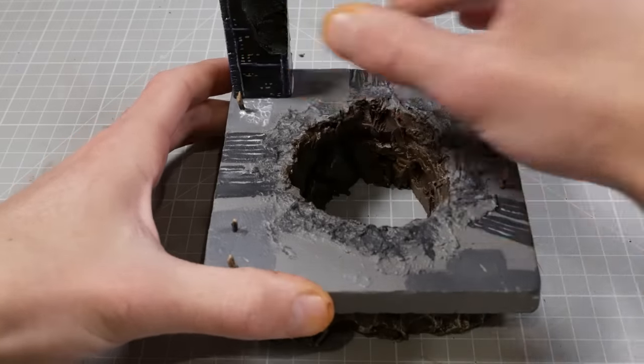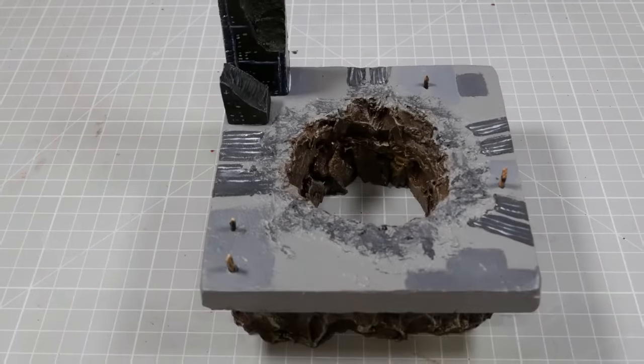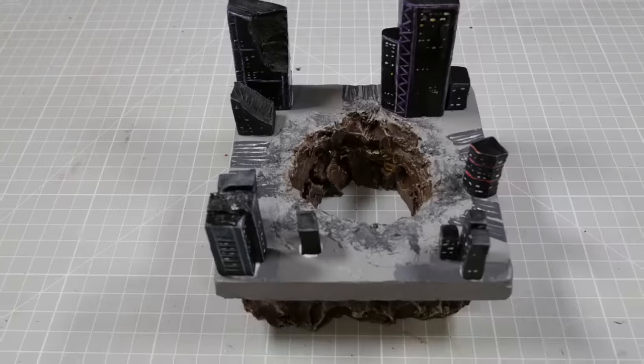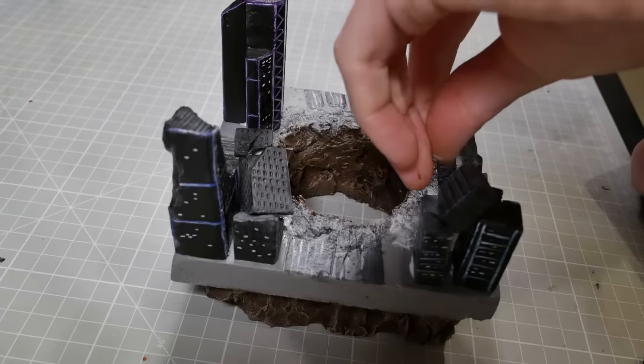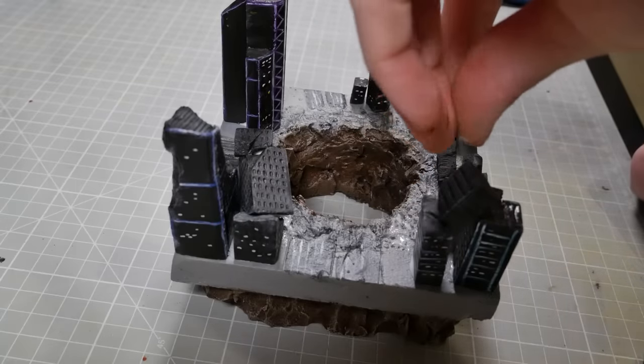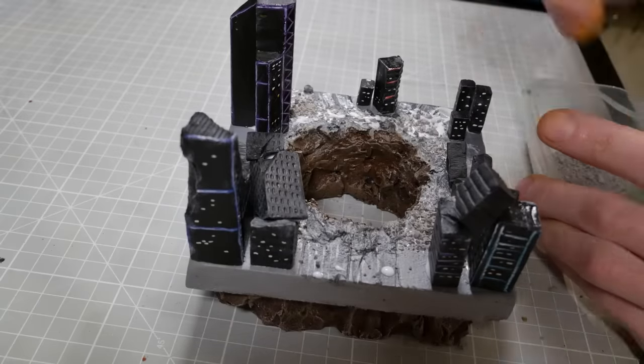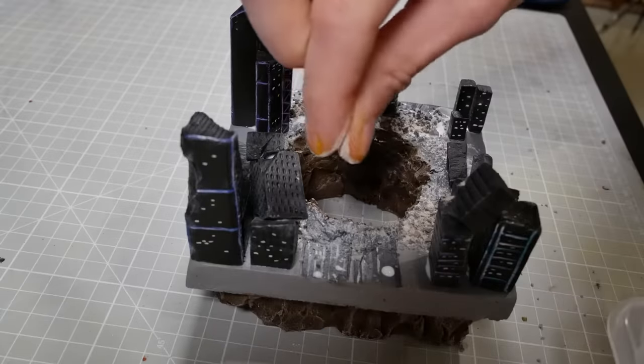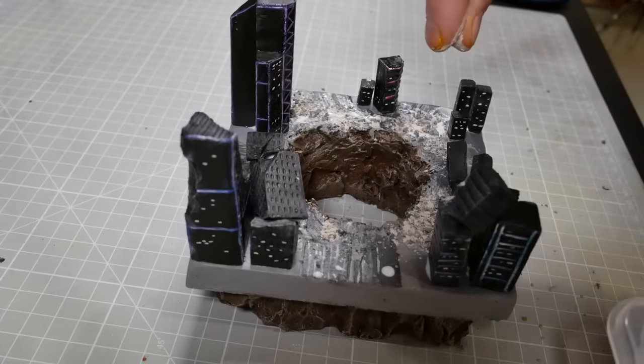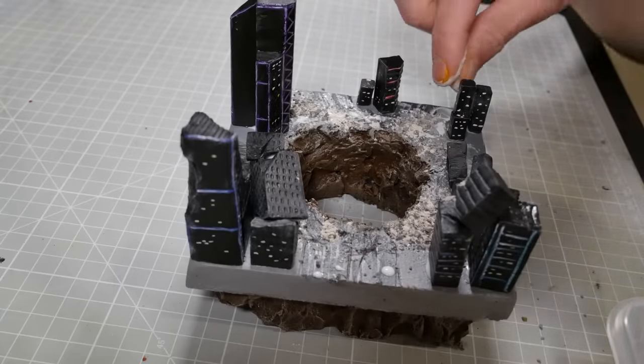Once that's all done I'm now ready to attach my buildings. To add a little bit more debris and smashed up ground to the city I'm going to add some rocks and broken clay. This is just super sculpey clay that I have ground down in a coffee grinder until it is a nice rocky texture and then I'll add a little bit of tile grout just to fill in all the gaps.